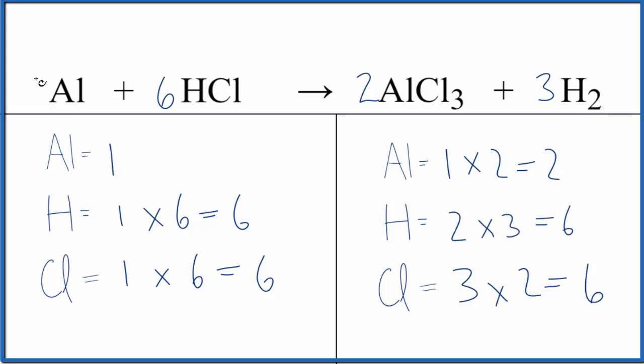We've balanced the hydrogens, and then if we put a two in front of the aluminum here as our coefficient, one times two, that gives us two. We're done. This equation is balanced.